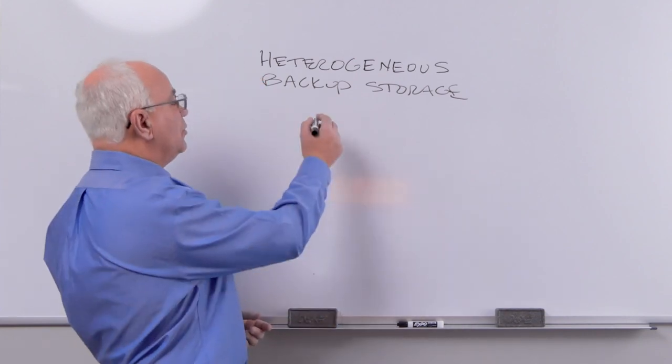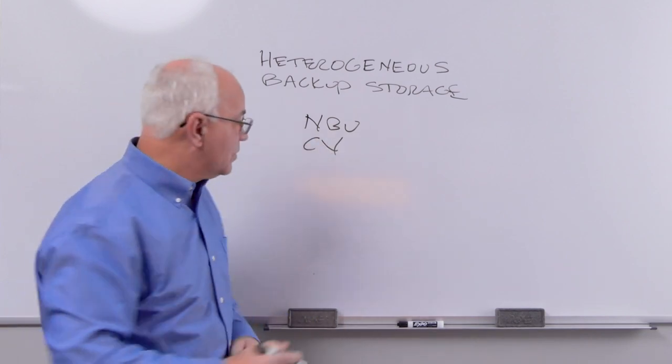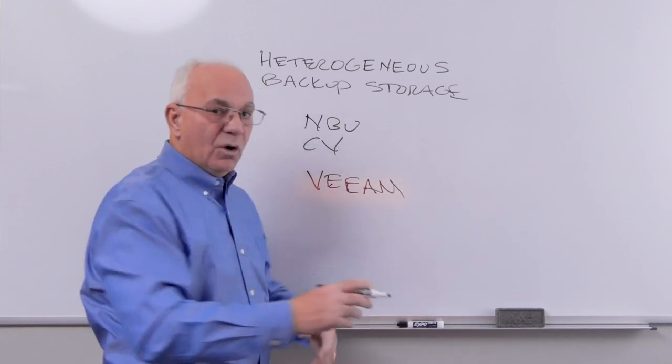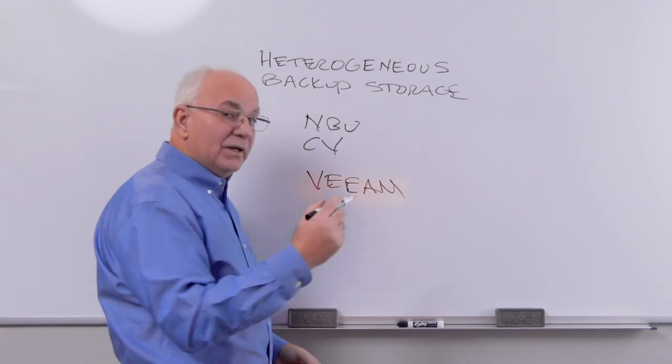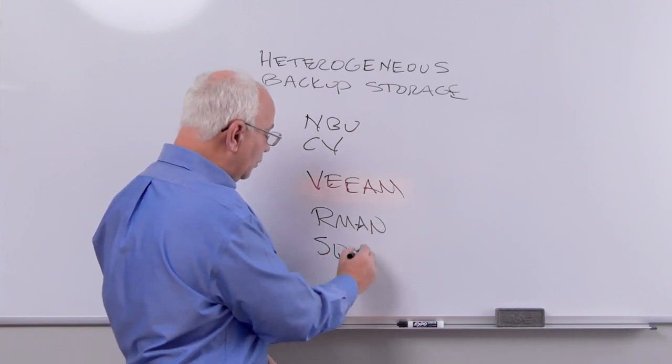For example, you may decide to use NetBackup or Commvault for your physical backups, but you may decide to use Veeam for your virtual backups. And for your database, you may go RMAN Direct, Oracle RMAN Direct, or you may go SQL Dumps.